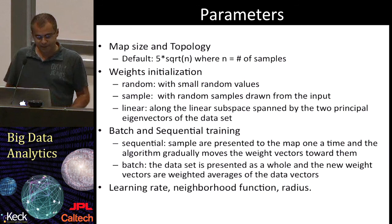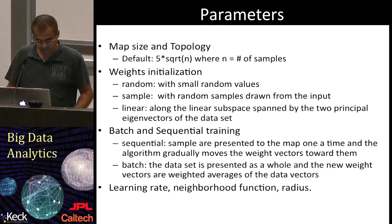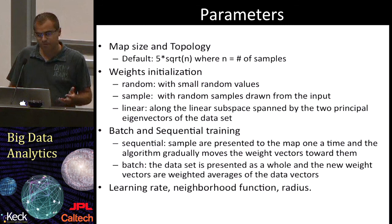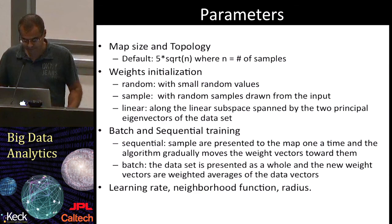Now, here is a list of parameters that have to be tweaked when using self-organizing maps. We need to choose the map size and its topology. As a rule of thumb, if n is the number of samples, we can choose a number of units equal to 5 times the square root of n. Prototypes can be initialized in different ways, for example randomly or drawn from the input data, similar to what we have seen with k-means. Training can be sequential, where samples are presented to the map one at a time, or batch, where the dataset is presented as a whole. We also need to fix the learning rate and choose the neighborhood function.